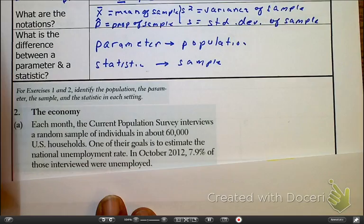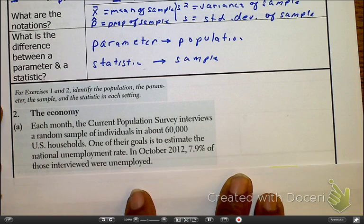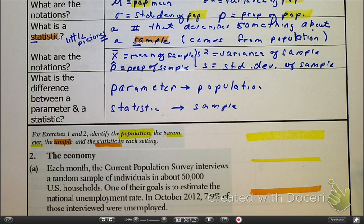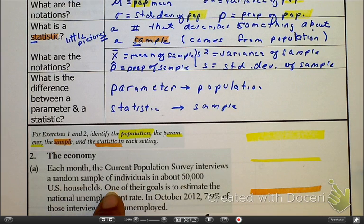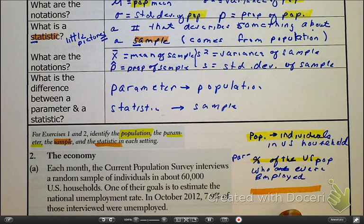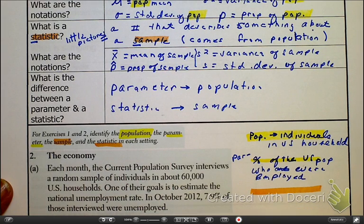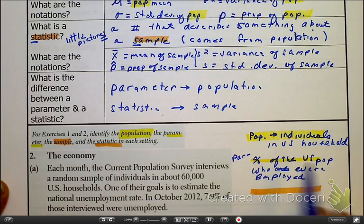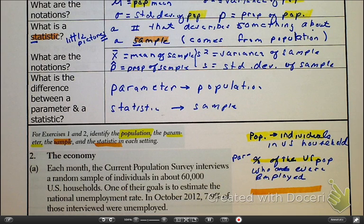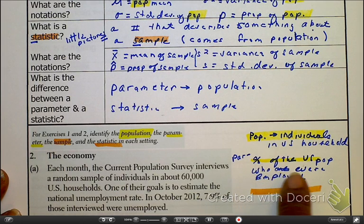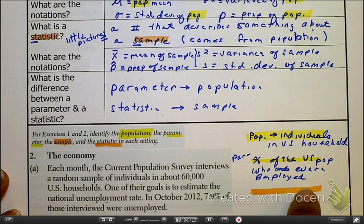So, let's look here and read over this information. My question here is, given the scenario, what is the population and what is the parameter? Our population here is going to be the individuals in the U.S. household. So, all the individuals in the U.S. households. And our parameter is a percent, specifically the percentage here of the U.S. populations who were employed.